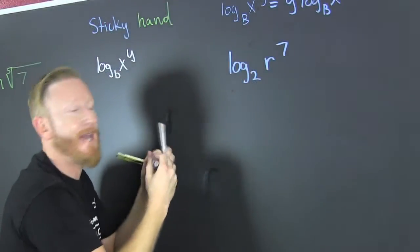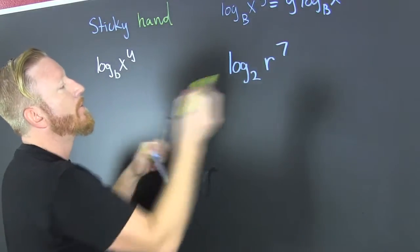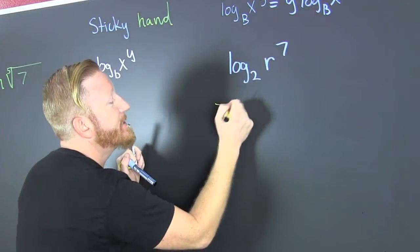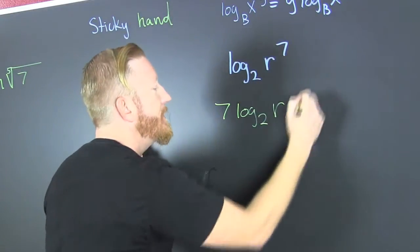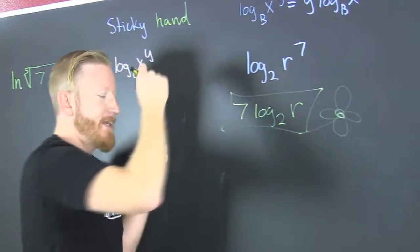So that when you see something like this, you can rewrite it as sticky hand. Seven log base two r.